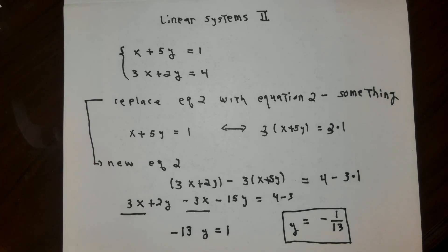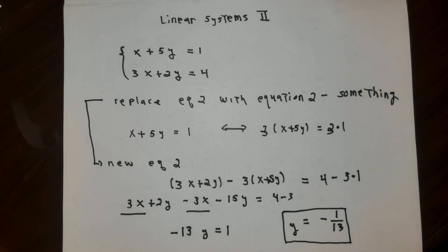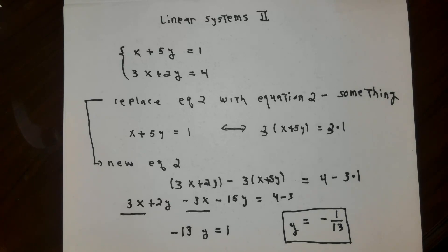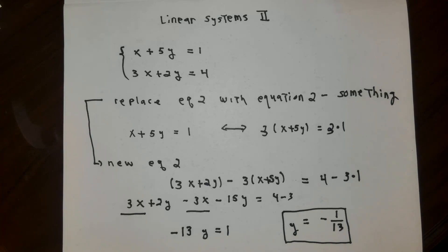The reason I multiplied the first equation by 3 is clear: when I write this out, the quantity being subtracted is 3x plus 15y, so the minus 3x cancels the 3x. In the resulting new version of the second equation, the variable x doesn't show up — only variable y does. 2y minus 15y is negative 13y, and 4 minus 3 is 1. My new second equation tells me that negative 13 times y must equal 1.